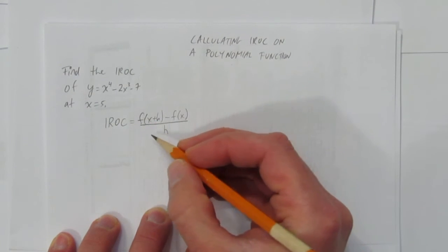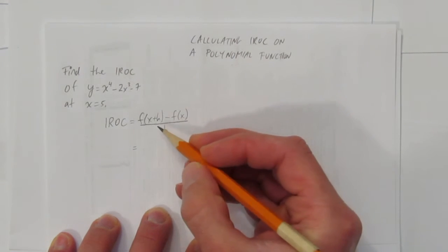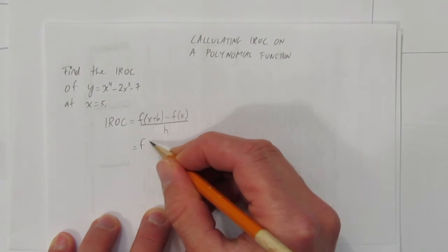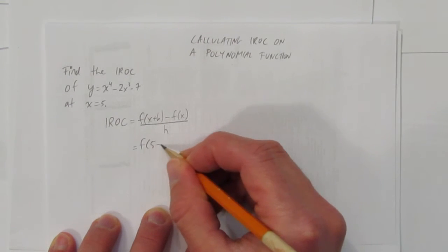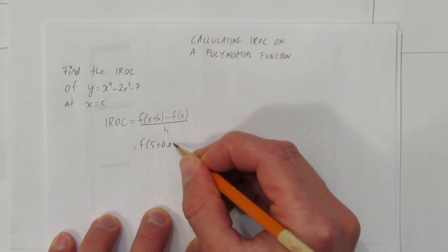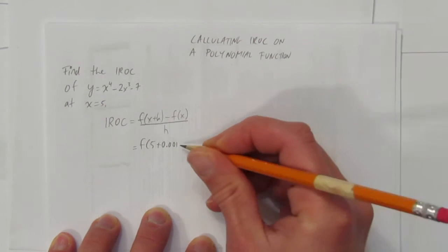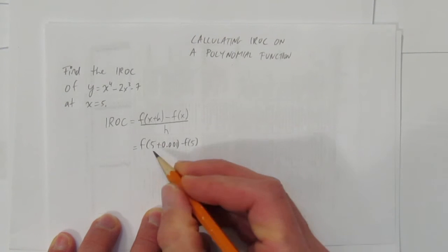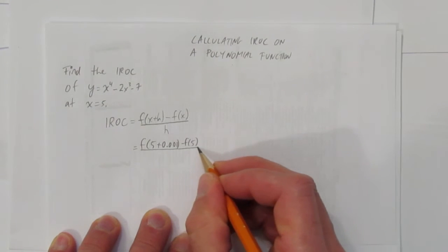Our small value will be h equals 0.001. And we're trying to find the rate of change at 5. So we want to know what's the value at 5 plus a tiny little bit, 0.001, minus what's the value at 5.